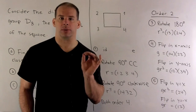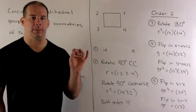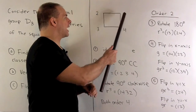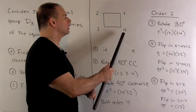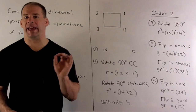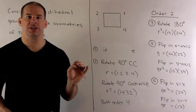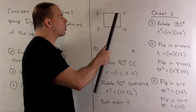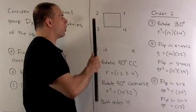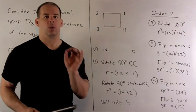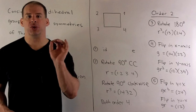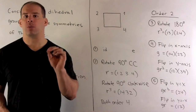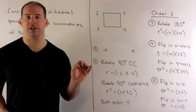We start with the square. We'll label the vertices 1 through 4 going counterclockwise. There are going to be eight symmetries. To do our counting, there are going to be four corners I could send vertex one to. Once we know that, there are going to be two ways we can orient the square. So we're going to have four times two equals eight symmetries.